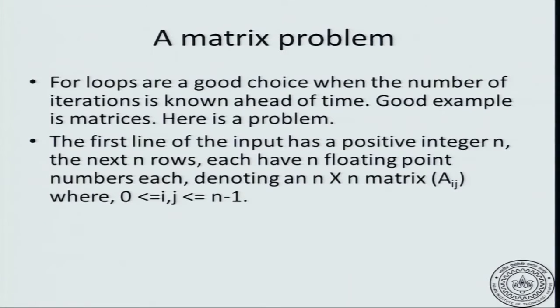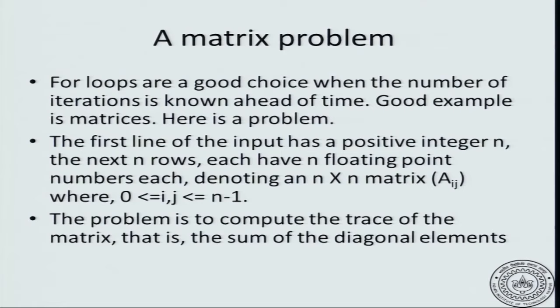Let us consider a sample problem. The first line of the input has a number n. The matrix size is n cross n and there are n floating point numbers in the matrix given row by row, so each line contains a distinct row. The problem is to compute the trace of the matrix. The trace of the matrix is the sum of the diagonal elements, defined as the summation from i equal to 0 to n minus 1 of A sub i,i. The matrix row and column indexing both start from 0. Let us write a C program to solve this problem.